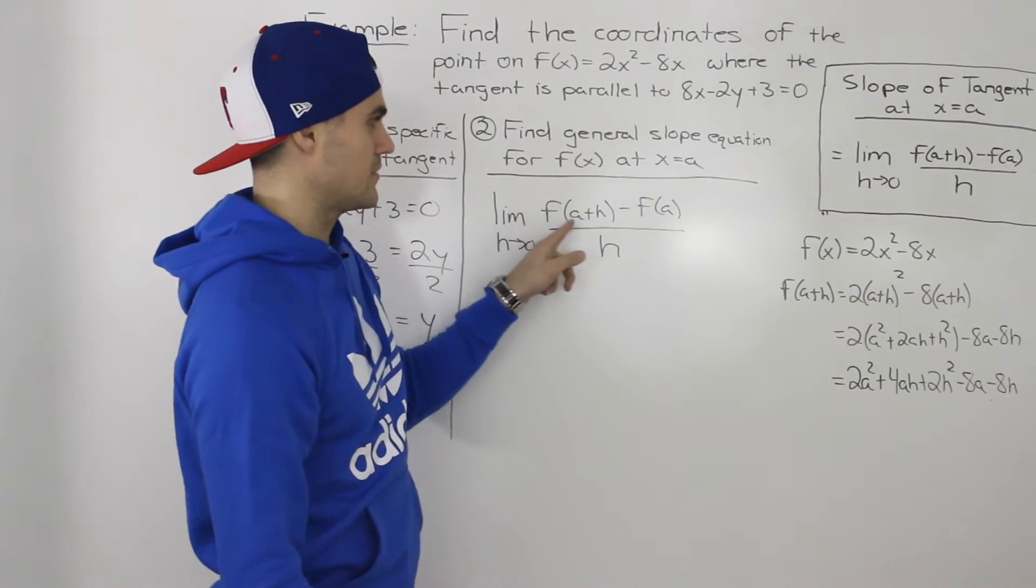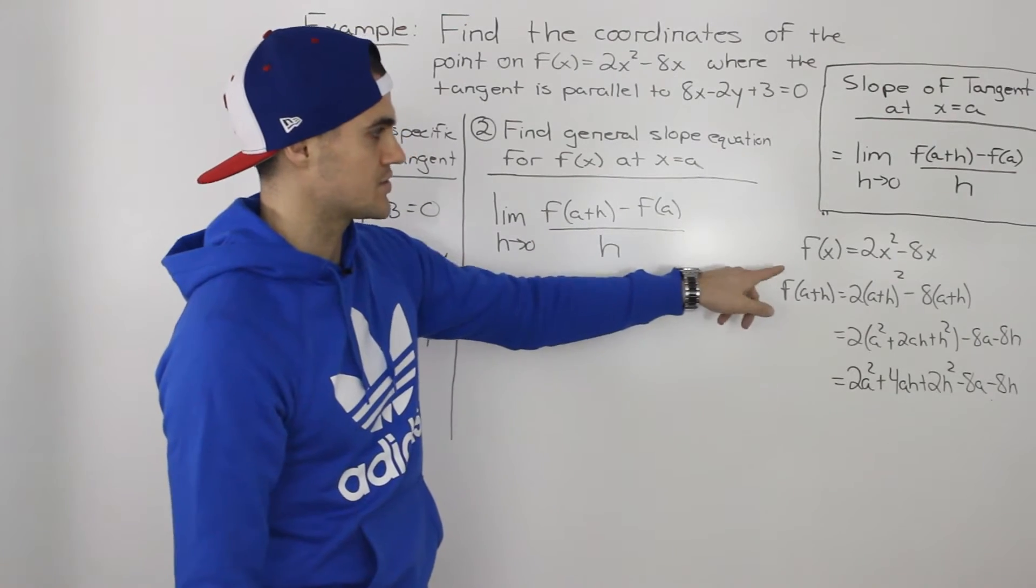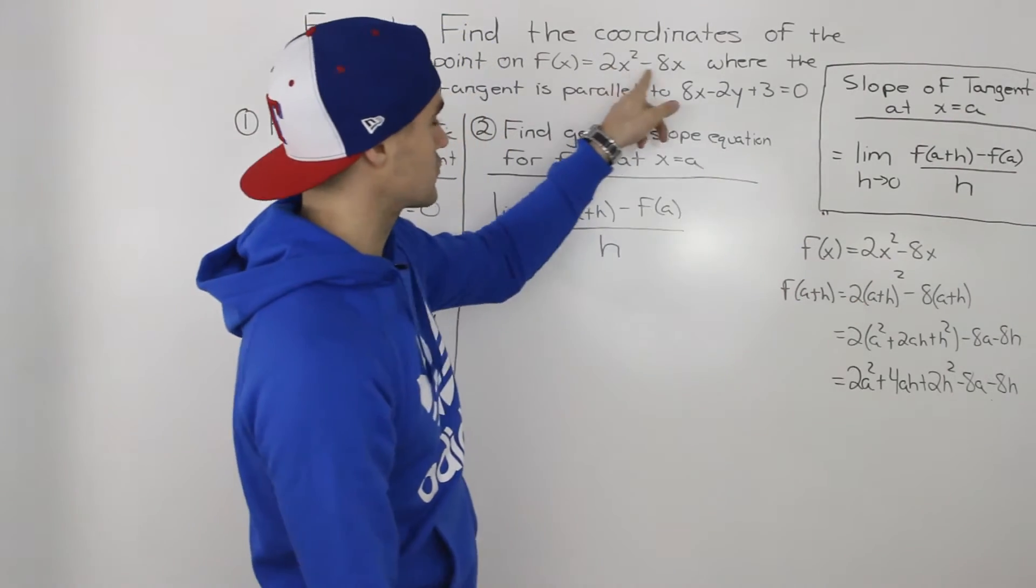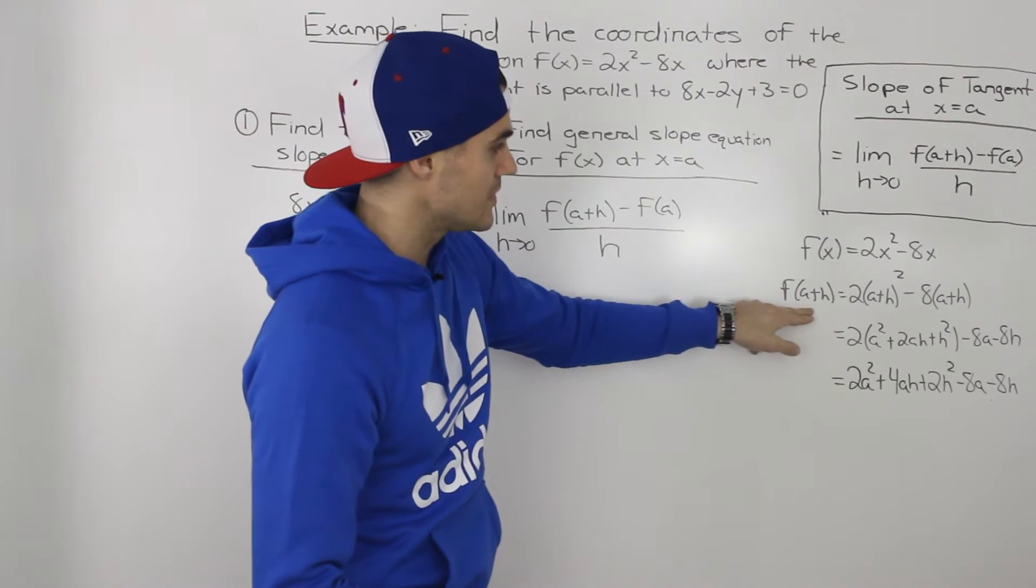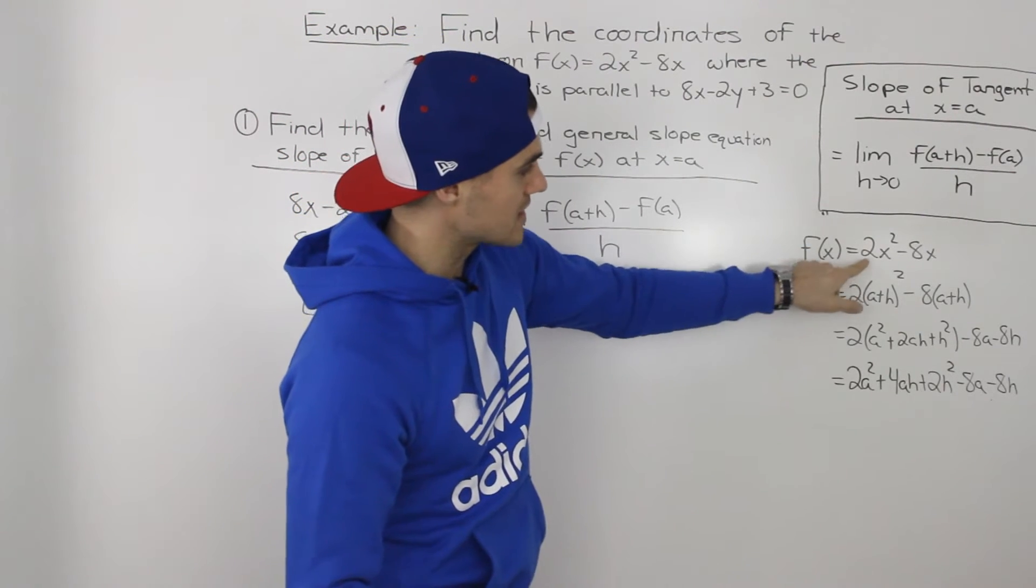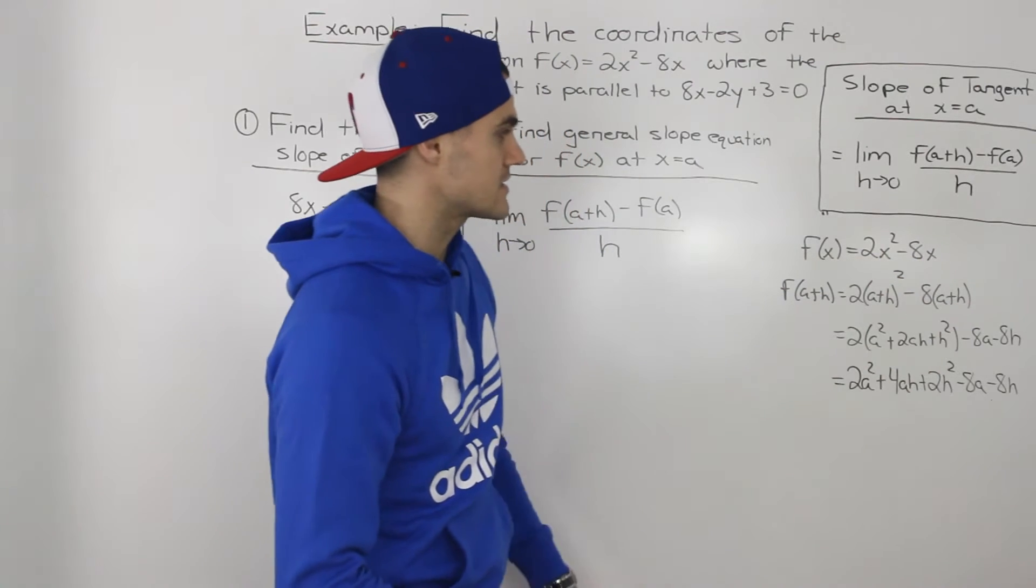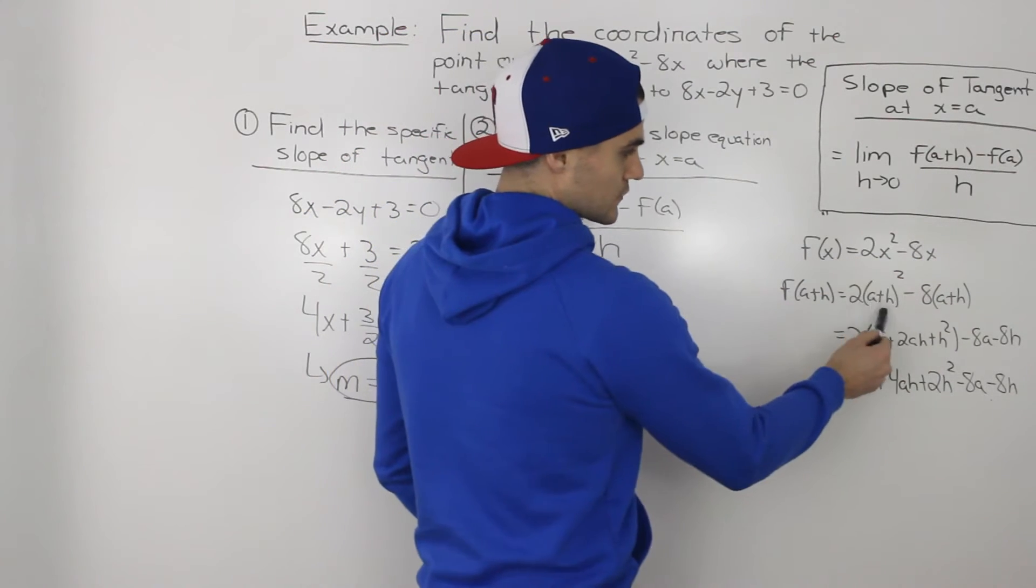Now the first part, f(a+h), I did on the side here. So f(x) = 2x² - 8x. That's given in the question. So f(a+h), we would plug in that a + h for all of the x's.